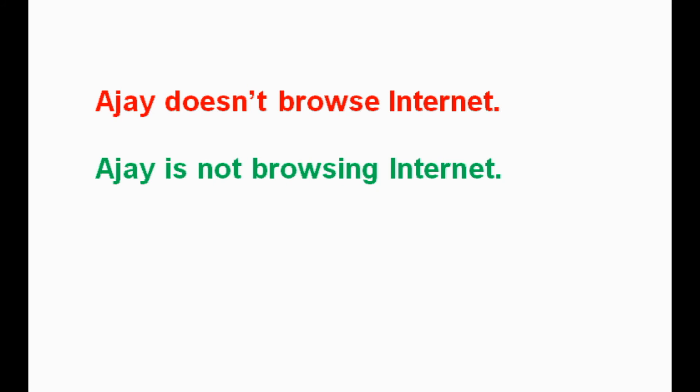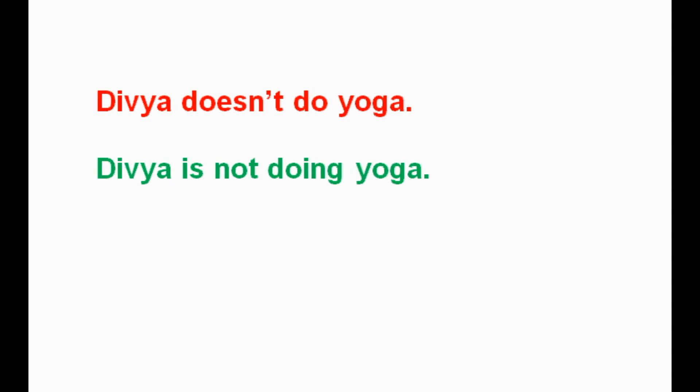Ajay doesn't browse internet. (Ajay internet browse chayyaar illa.) Ajay is not browsing internet. (Ajay ippol internet browse chayuga yalla.) Dhivya doesn't do yoga. (Dhivya yoga chayyaar illa.) Dhivya is not doing yoga. (Dhivya ippol yoga chayyuga yalla.)